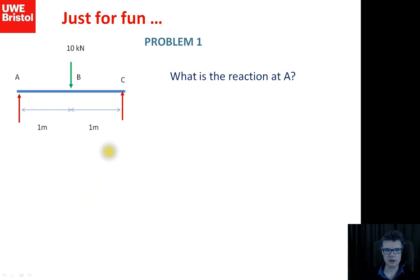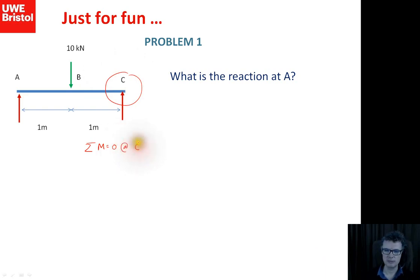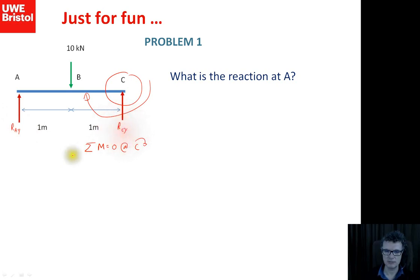To formally solve this problem and find the reaction at A, I'll take moments. I'm looking for the A reaction, so the best choice is to take moments around C to eliminate that unknown. Taking moments at C, going clockwise with the UE convention, I draw arrows to determine which moments are positive or negative. We label the reactions as A_Y and R_CY.